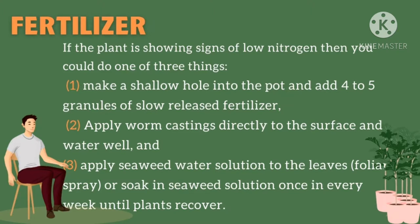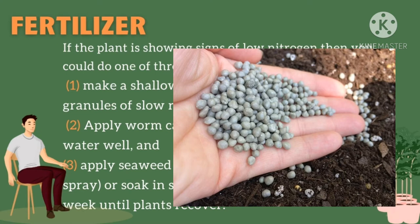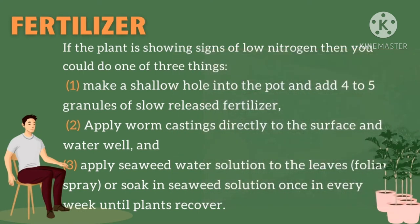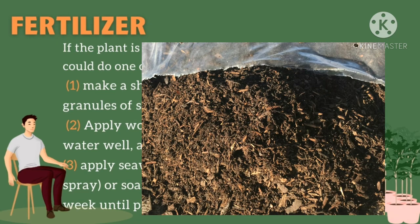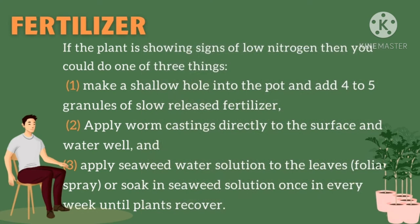If the plant is showing signs of low nitrogen, you could do one of three things. First, make a shallow hole into the pot and add 4 to 5 granules of slow-released fertilizer, which provides a steady supply of plant nutrients over an extended period. Second, apply worm castings directly to the surface and water well — worm castings are an organic form of fertilizer produced from earthworms. Third, apply a seaweed water solution to the leaves as a foliar spray, or soak in a seaweed solution once every week until plants recover.